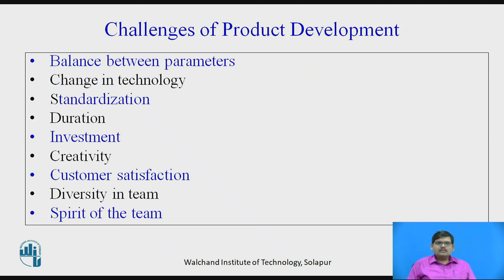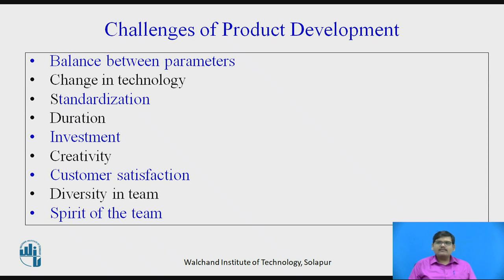Moving further — the challenges of product development. We have seen the characteristics required and who is involved. Now, what are the challenges faced during product development? The first challenge is balance between parameters. When designing a product, there are different parameters to consider. For example, if you want to design an airplane, the weight can be reduced to increase efficiency — but only to a certain extent. Beyond that, you cannot reduce weight further without causing product failure. A balance between weight, speed, and other desired parameters must be maintained.